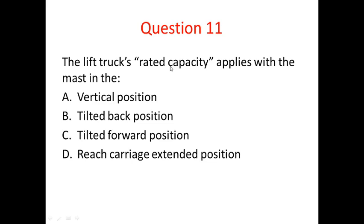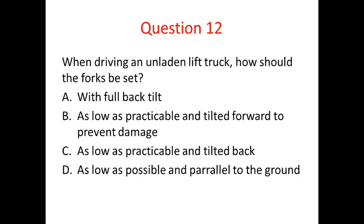The lift truck's rated capacity applies with the mast in which position? When we looked at the previous presentation, the image on the rating plate highlighting A and B — A being the max height, B being the max load centre — you could see that the mast was vertical. It wasn't tilted forward or back, it was in a vertical position. So the answer there is A.